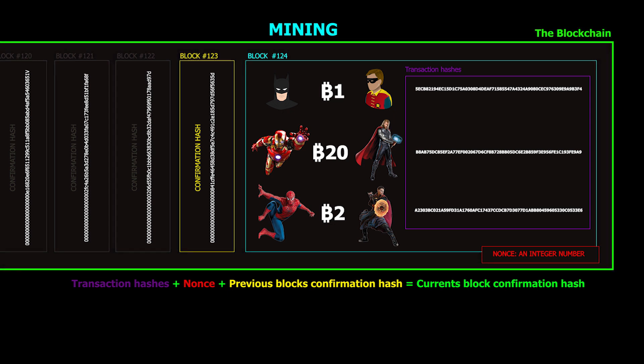Bitcoin's average time to confirm a block is set to 10 minutes, and the difficulty is automatically adjusted every two weeks to make sure this is occurring — difficulty being the number of leading zeros in the confirmation hash. So if in a two-week time frame it took on average 15 minutes to confirm blocks, the network will automatically decrease the number of leading zeros required. The problem is, if one wants to use Bitcoin at the grocery store they must wait on average 10 minutes for a confirmation. Most vendors allow what are called zero-confirmed transactions to get around this, but this can be dangerous. Network speed is one thing that is affecting Bitcoin negatively.